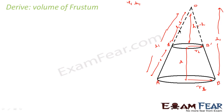We can find L1 and H1 in terms of L, H, R1, and R2. Once we solve for those, we can find the volume of the frustum. The volume of the bigger cone and smaller cone are all in terms of L1 and H1. If we find L1 and H1 in terms of known values, we can subtract the smaller cone volume from the bigger cone volume to get the frustum volume.